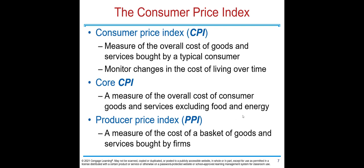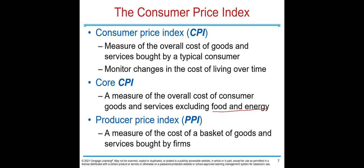Now that we understand why inflation is important, the next question is how we calculate it. First we need to understand price indices. The Consumer Price Index, or CPI, is a measure of the overall cost of goods and services bought by a typical consumer, and it is used to monitor changes in the cost of living over time. Core CPI excludes food and energy, because these two items are very volatile. CPI represents a basket of about 80,000 goods, including housing, cars, health insurance premiums, and everything an average household spends on in a month.